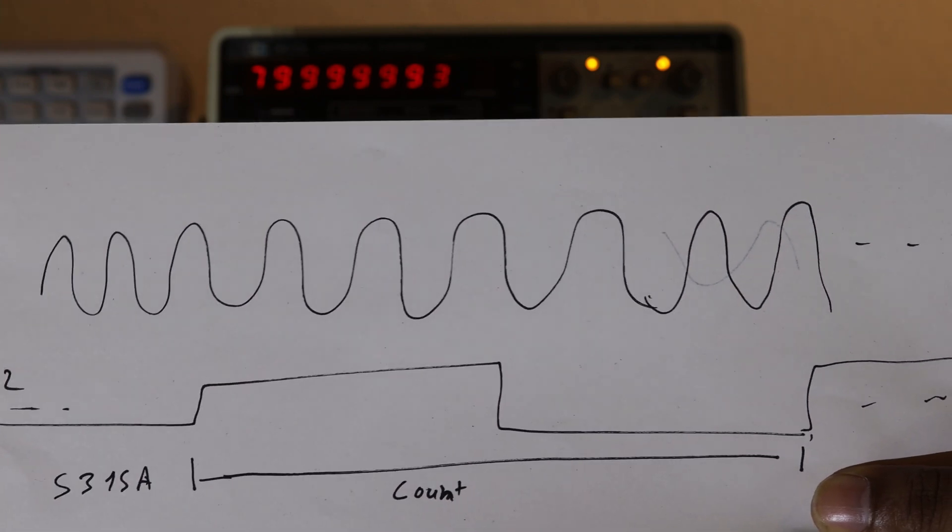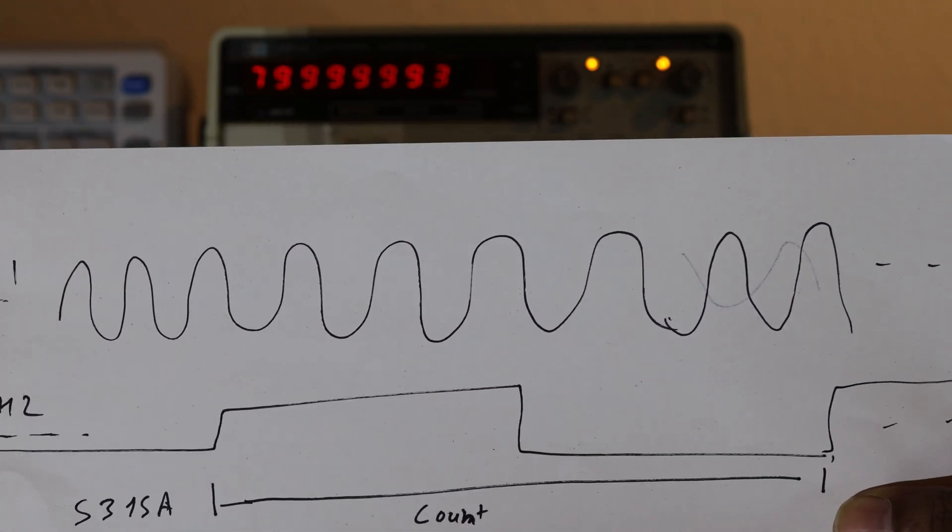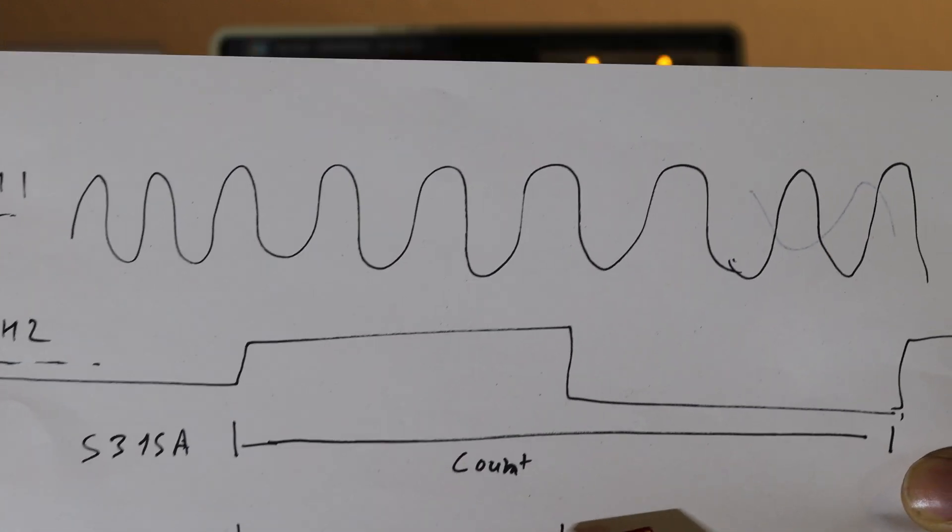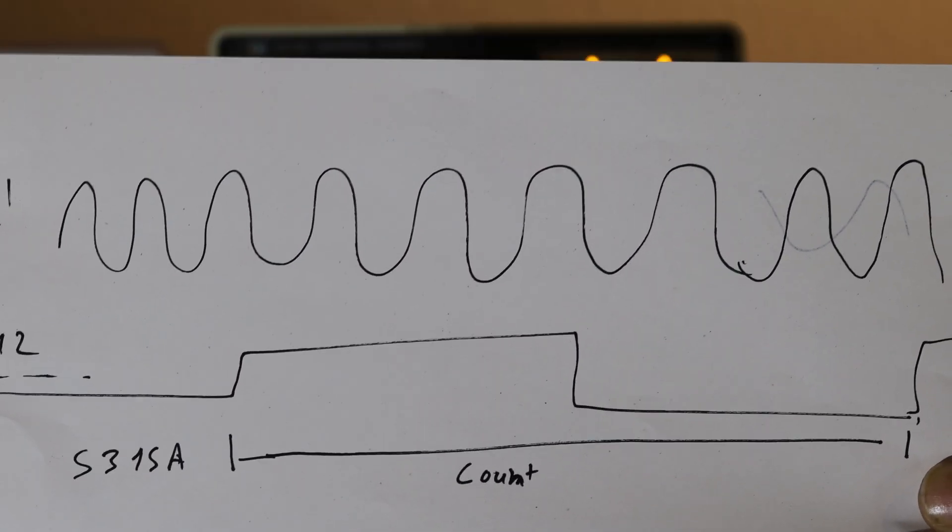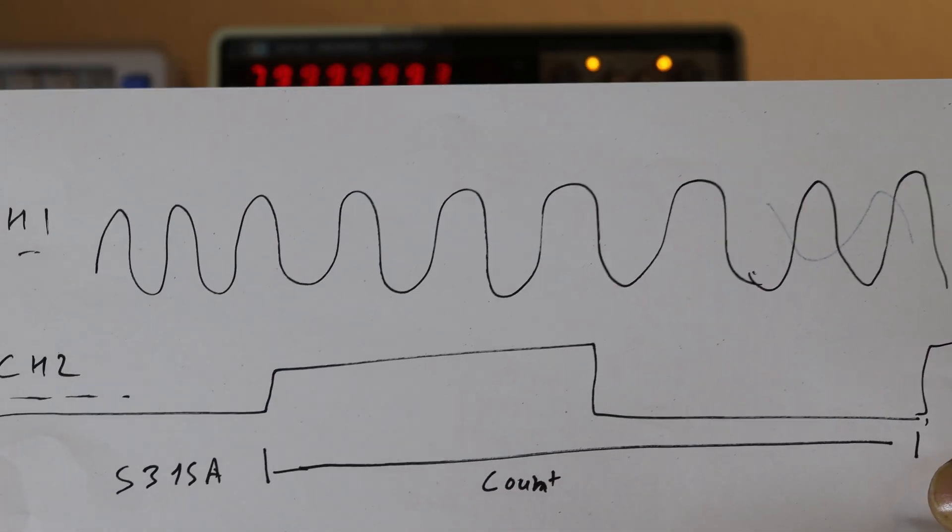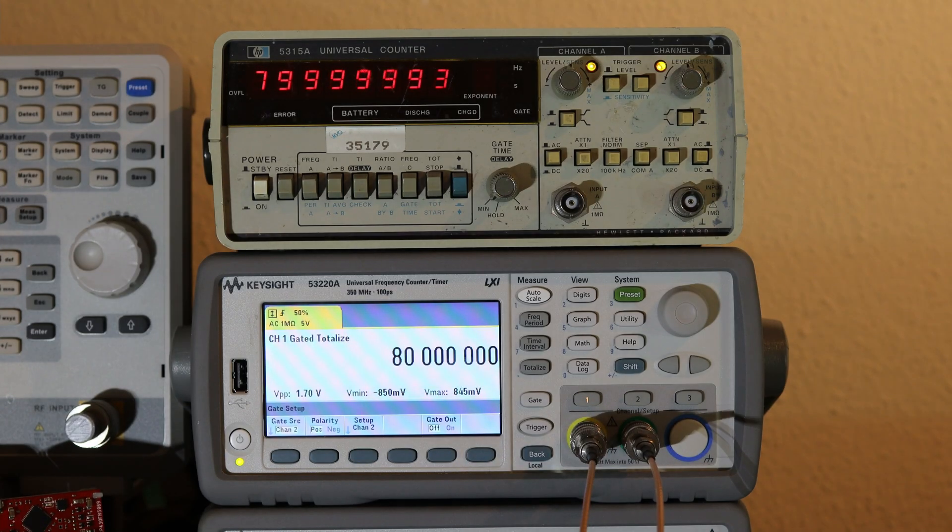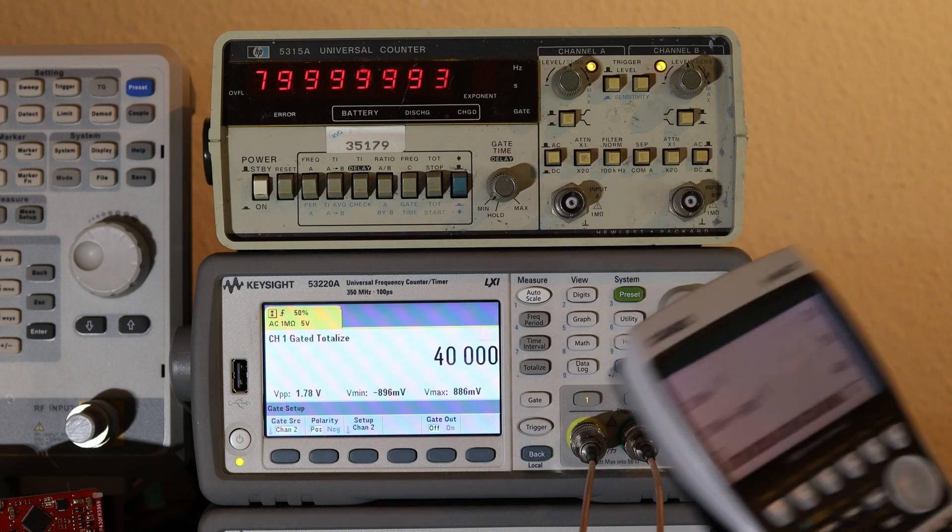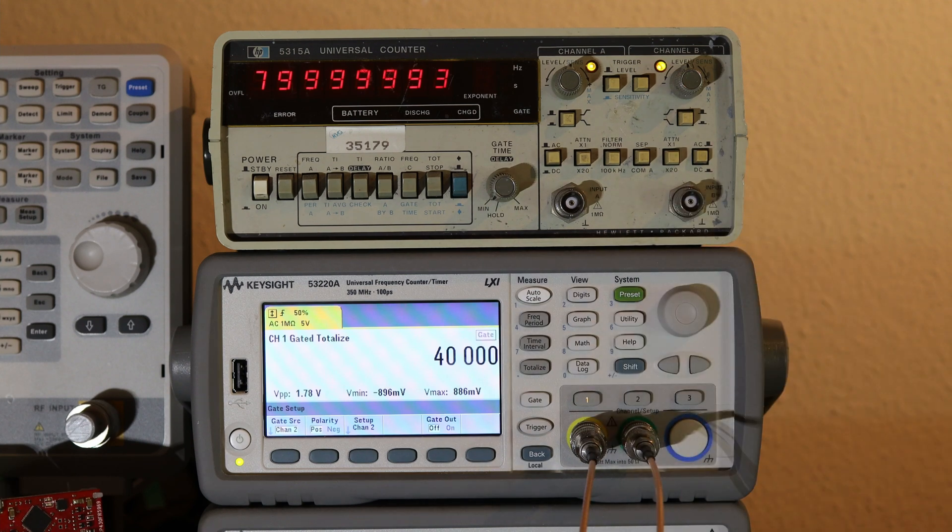To decrease the gate time for 53220A, I am going to set the channel 2 frequency to 1 kilohertz. 1 kilohertz means 1 millisecond period, which is going to translate to 500 microseconds of gate time. I have set the frequency of channel 2 to 1 kilohertz, which means gate time of 500 microseconds. Gate time of 500 microseconds should give you 40 kilo pulses, and it is giving 40 kilo pulses. So everything is working fine.